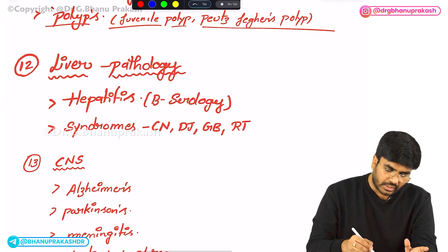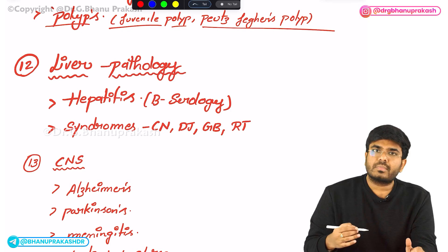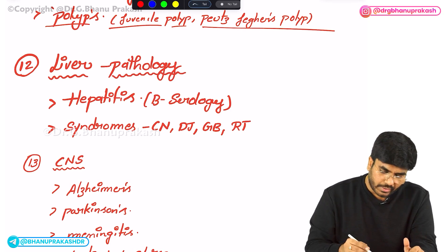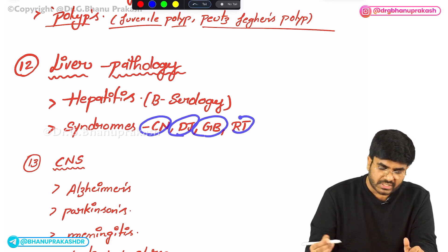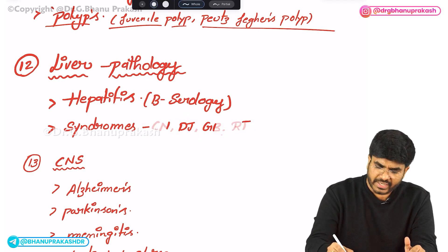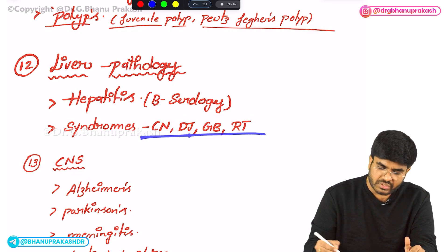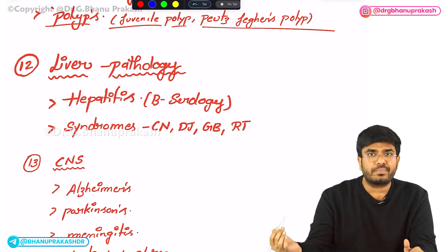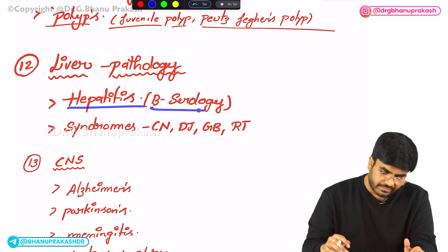In liver pathology, know the congenital syndromes causing hyperbilirubinemia: Crigler-Najjar syndrome, Dubin-Johnson syndrome, Gilbert syndrome, and Rotor syndrome. Definitely expect one MCQ from here, especially in the APG exam. Hepatitis B serology and its graph — different phases — are also important.